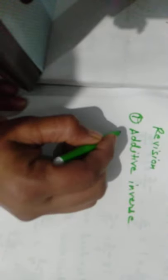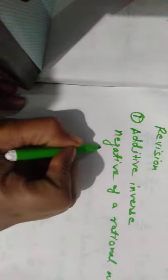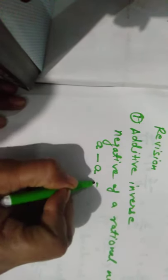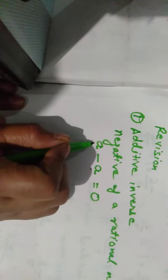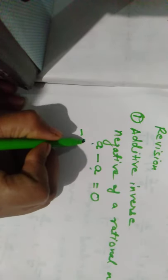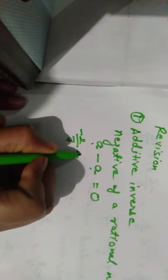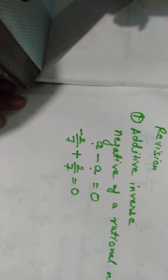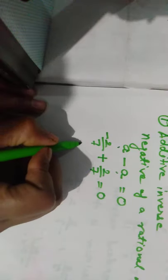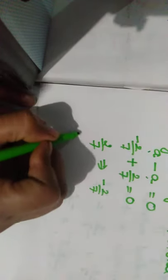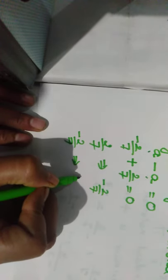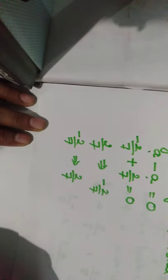Additive inverse means the negative of a number. For a rational number 'a', when added to its negative the result is 0. So minus a is said to be the additive inverse of a, and a is said to be the additive inverse of minus a. For example, the additive inverse of 2 upon 7 is minus 2 upon 7, and the additive inverse of minus 2 upon 7 is 2 upon 7.